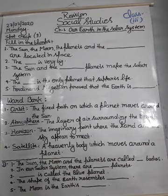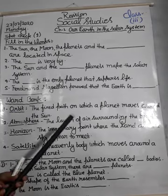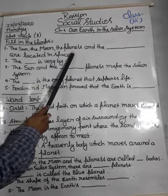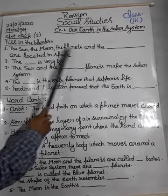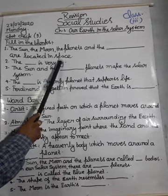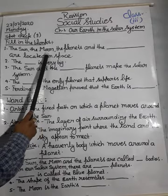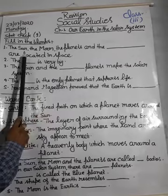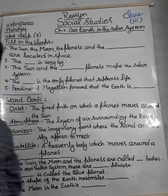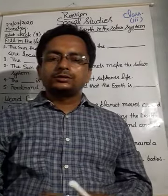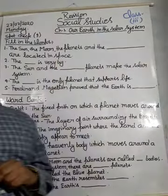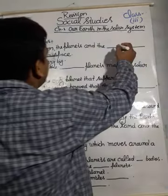The first question is: the sun, the moon, the planets and the dash are located in space. What will be the answer? I hope you got the answer. If not, the answer will be stars. The sun, the moon, the planets and the stars are located in space.